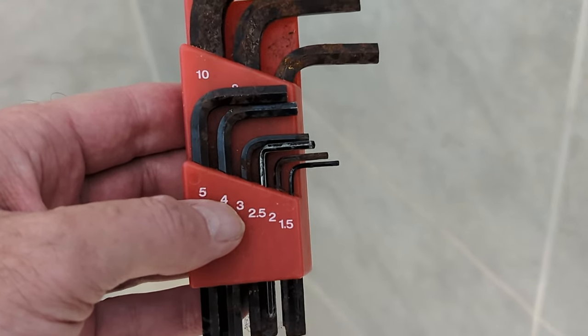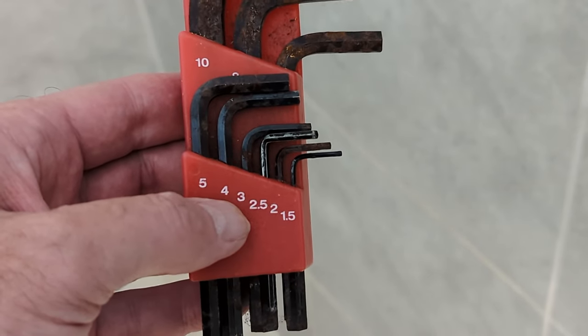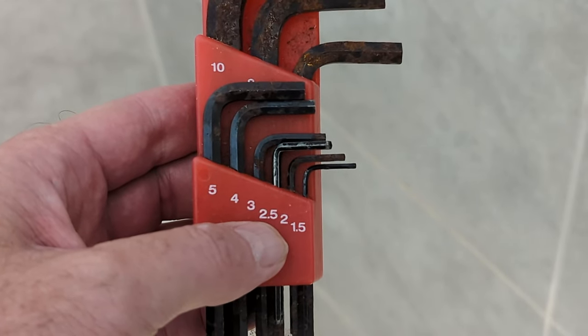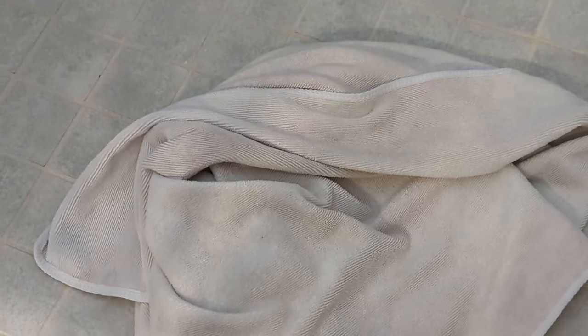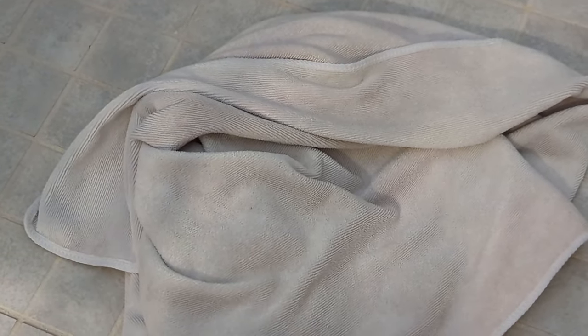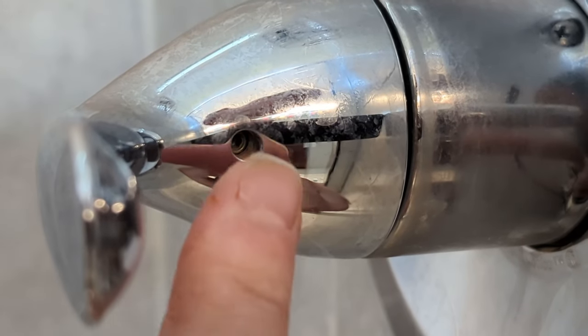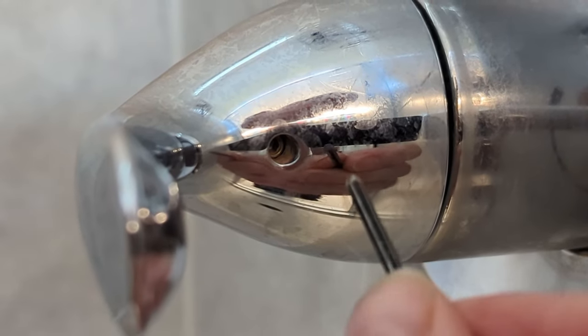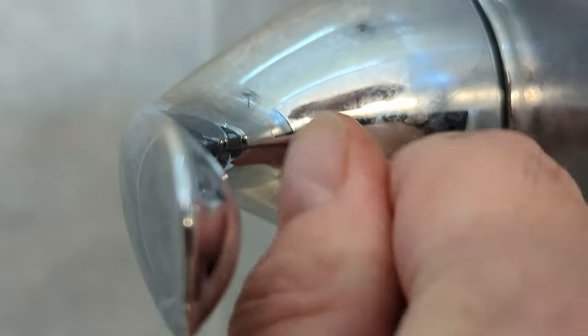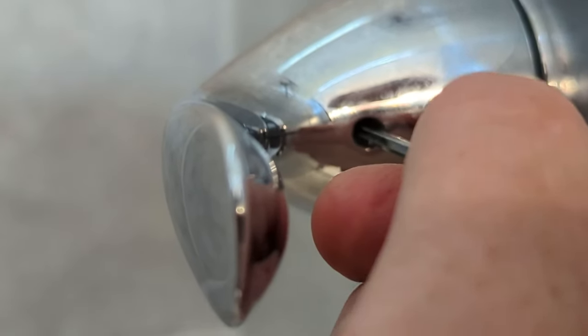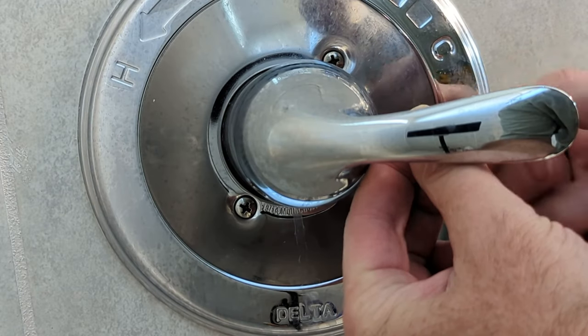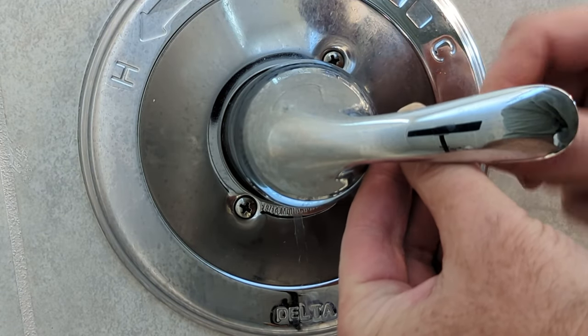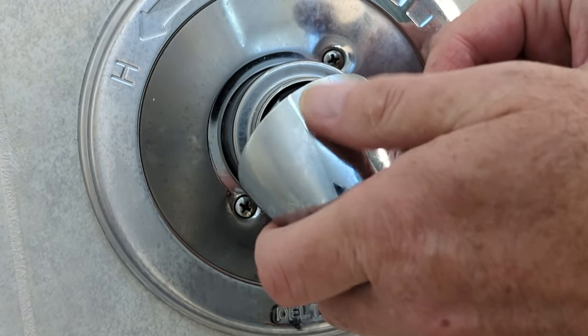So the first thing that we're going to do is grab our allen wrenches. This particular one takes a two and a half, which is right there. Now the first thing we do is we take a towel and put it over the drain and I'll tell you why in just a second. Next is we locate the set screw, which you can see right here. We just stick our allen key in there and then just twist it and it'll loosen up. We carefully remove that set screw and this handle is going to come off just like that.